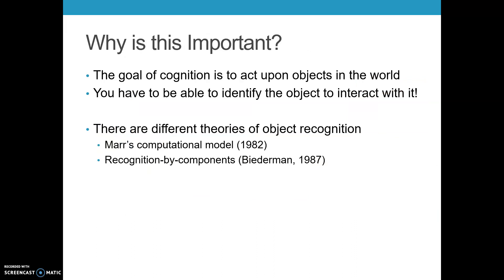Why is object recognition so important? The reason is that the goal of cognition is to act upon objects in the world, and if you want to interact with or act upon an object, you have to be able to identify it. We're going to talk about two major theories: Mar's computational model from 1982 and Biedermann's recognition by components theory.